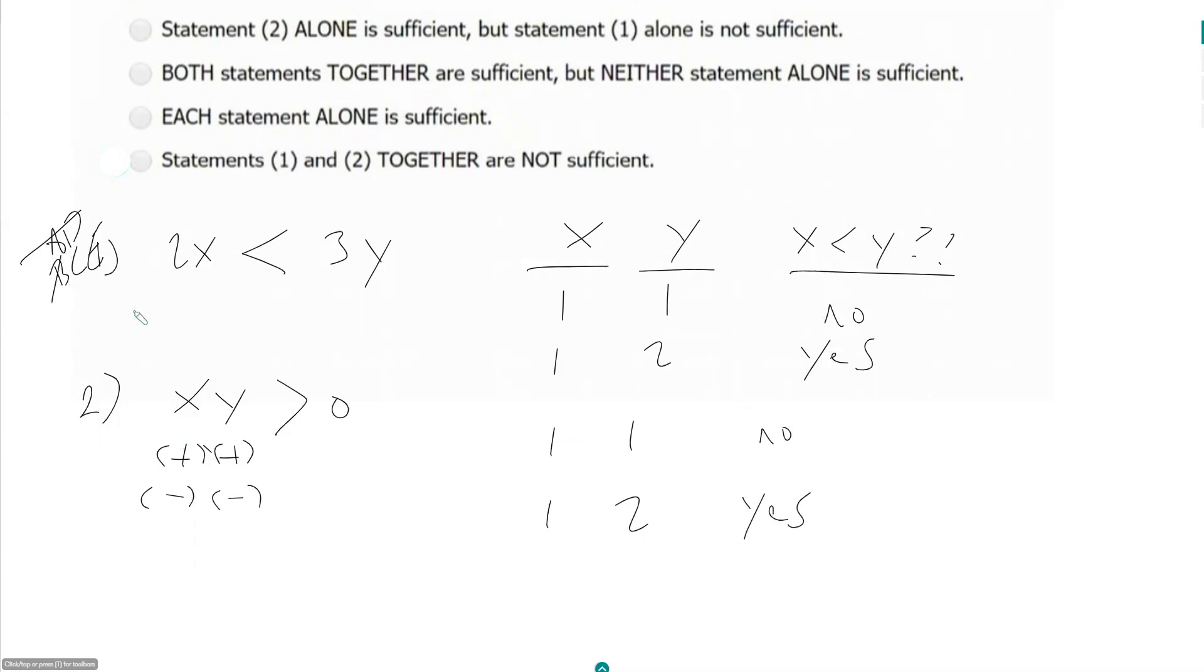And so if I reused both of my examples from before, I shouldn't have to look at them together. I know that even together they will not be sufficient. So E is the answer.